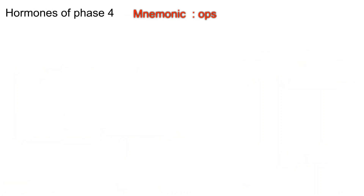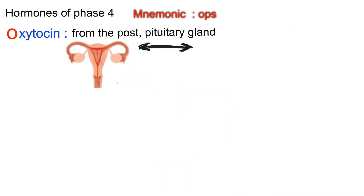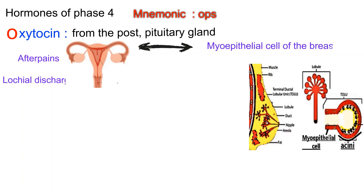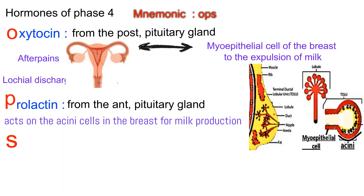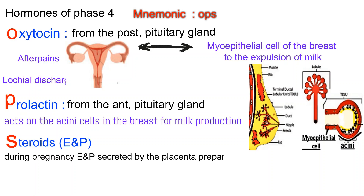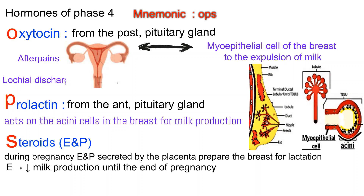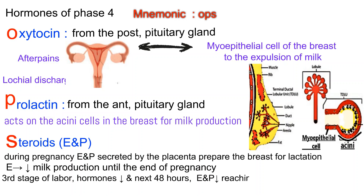Hormones of phase 4 — mnemonic OPS. O: Oxytocin from the posterior pituitary stimulates uterine contractions causing afterpains and lochial discharge; during breastfeeding it stimulates myoepithelial cells of the breast for milk expulsion. P: Prolactin from the anterior pituitary acts on acini cells in the breast for milk production. S: Steroid (estrogen and progesterone) — during pregnancy, placental estrogen and progesterone prepare the breast for lactation, but estrogen inhibits milk production. After the third stage of labor, placental hormones decline and within 48 hours estrogen and progesterone reach their lowest levels one week postpartum.